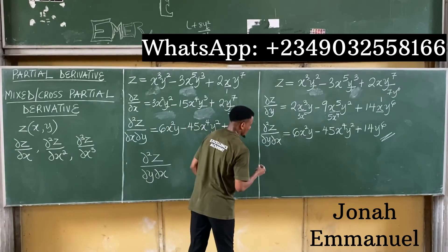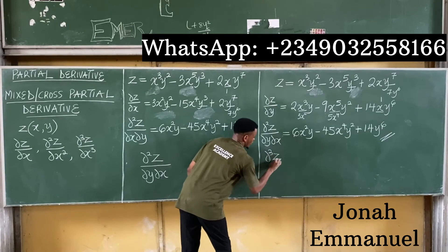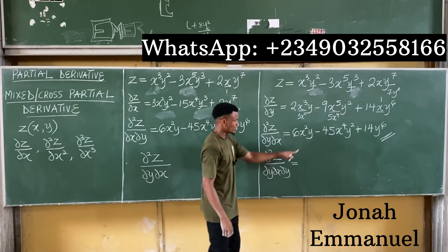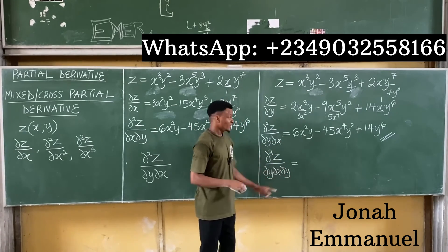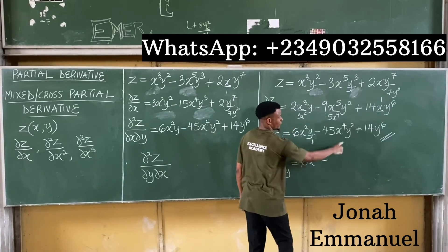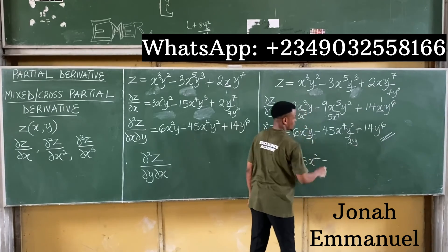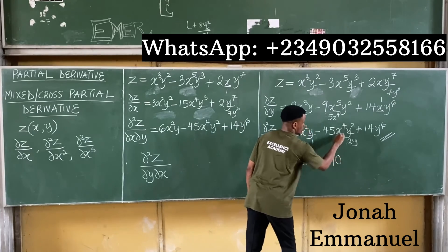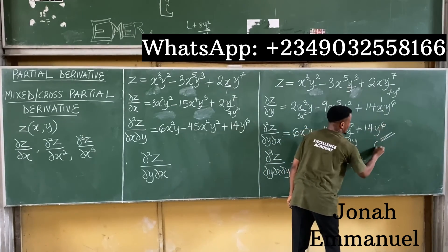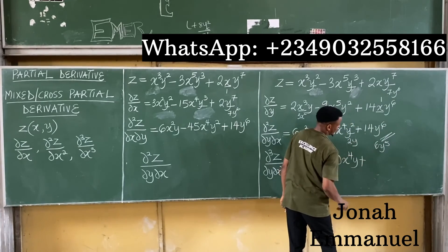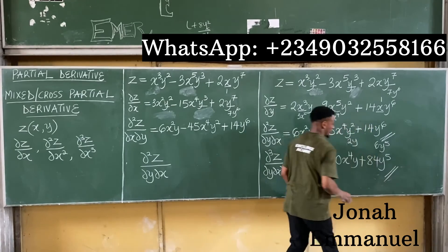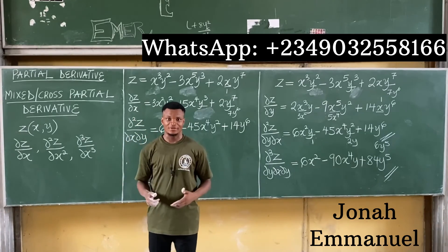Is it also possible to have something like ∂³z/∂y∂x∂y? Yes — focusing now on y in our previous result: differentiating y gives 1, so 6x² times 1 is 6x². Differentiating y squared gives 2y; 45 times 2 is 90, giving minus 90x⁴y. Differentiating y to the power 6 gives 6y⁵; 14 times 6 gives 84y⁵.